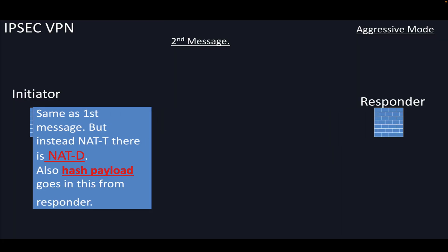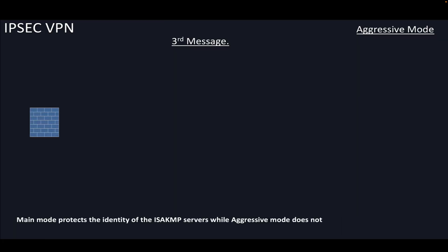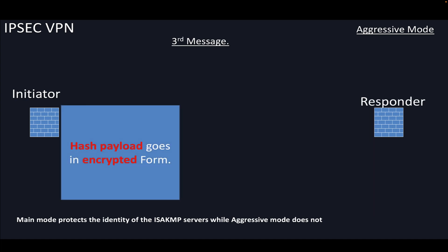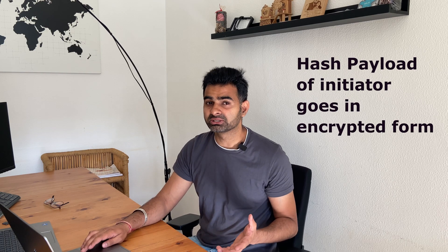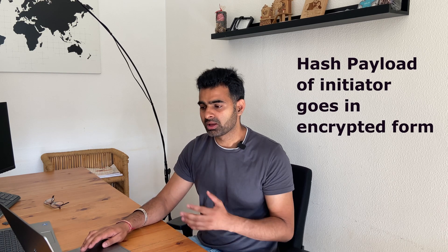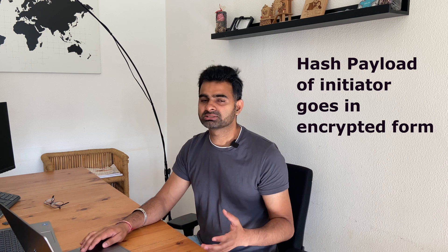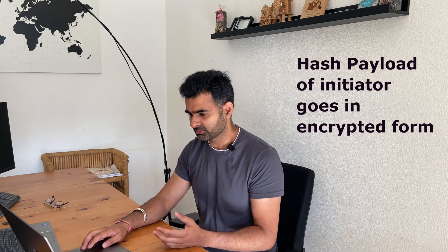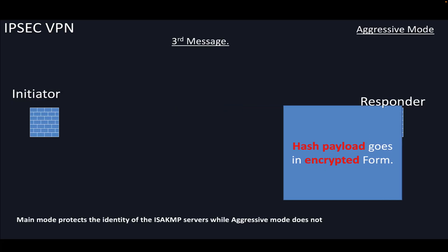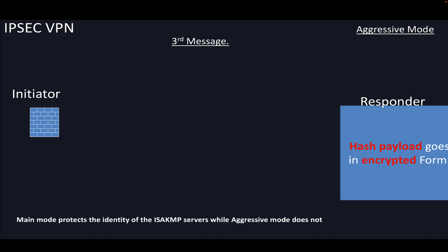You might be thinking that we haven't seen the hash payload of the initiator. The initiator's hash payload will go in the third message. In the third message, the hash payload goes but in encrypted form — the third message in aggressive mode is encrypted.